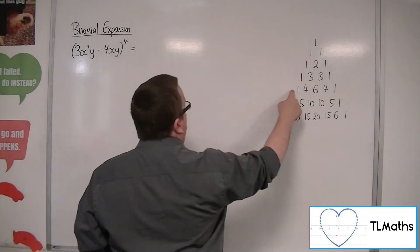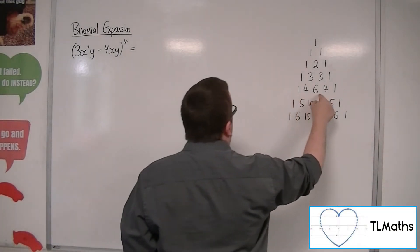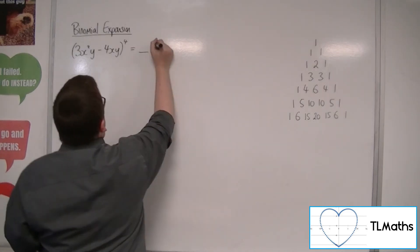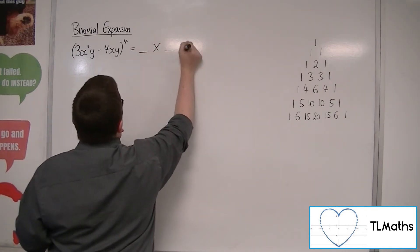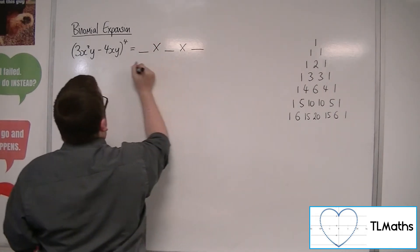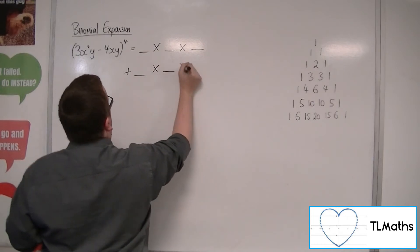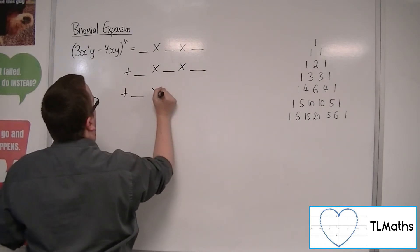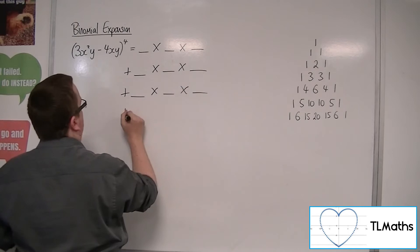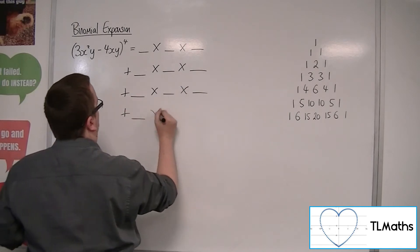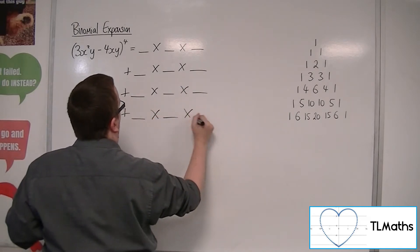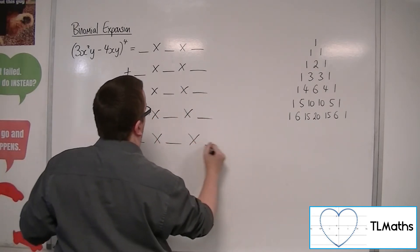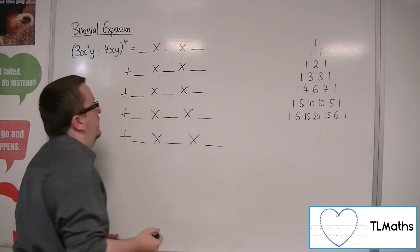So, with the fourth row, we've got 1, 2, 3, 4, 5 terms.